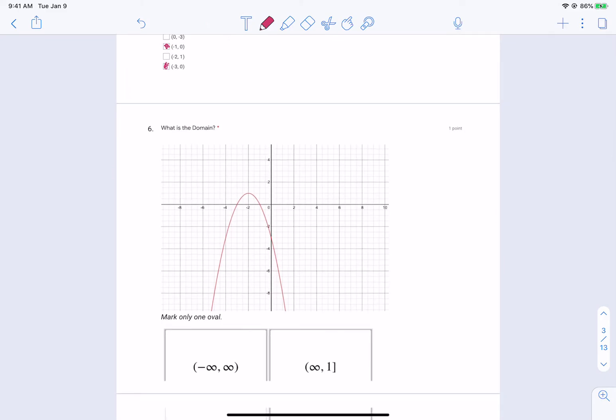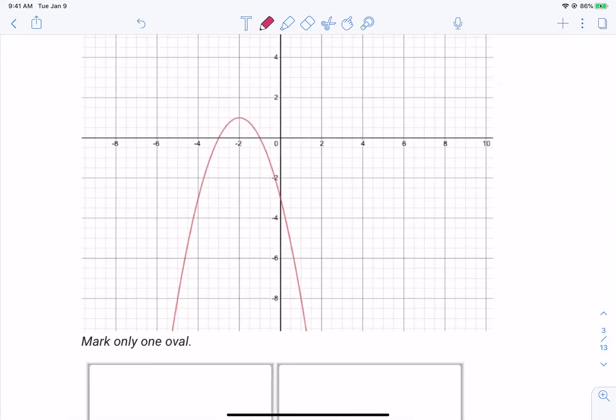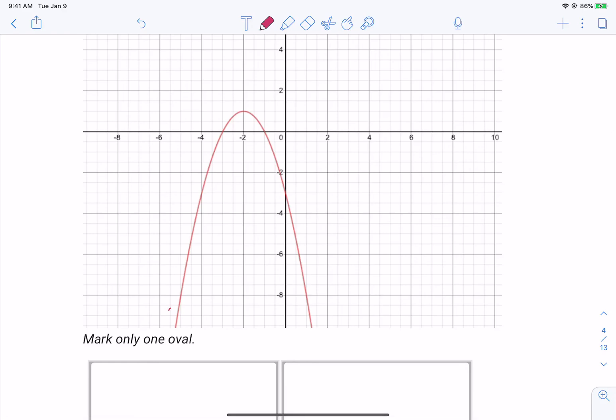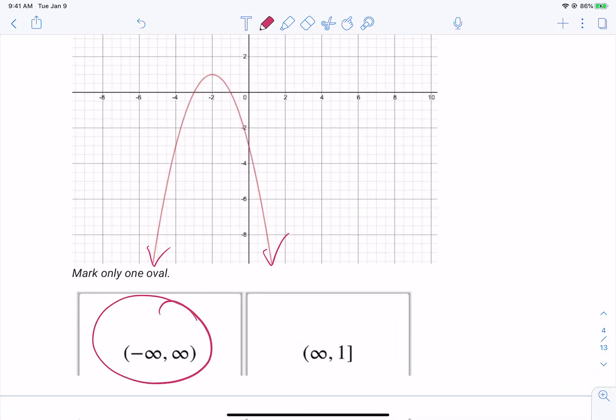Domain is the set of what? Domain is the set of what? X-values, exactly. So when you're looking at a graph, look at how it stretches from left to right, because left to right are the x-values. And so if we look at this function, we're assuming it's going to keep getting wider and wider and wider. It's a parabola. And so because of that, we are going to assume that it is from negative infinity to positive infinity.